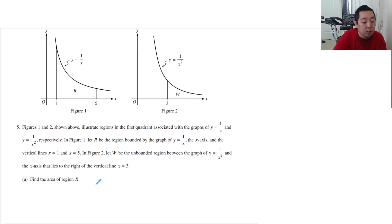Part A: Find the area of region R. I'm going to integrate from 1 to 5 of the height of my rectangles, which is 1 over x dx. This is ln of absolute value of x from 1 to 5. That's ln 5 minus ln 1. ln of 1 is just 0, so that's ln 5.